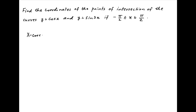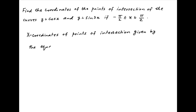Now, the x-coordinates of the points of intersection of the given curves y = cos x and y = sin 3x are given by the equation cos x = sin 3x, which is equal to cos(π/2 − 3x).